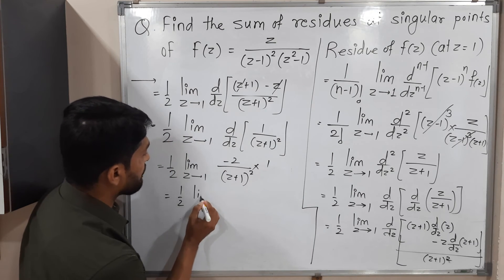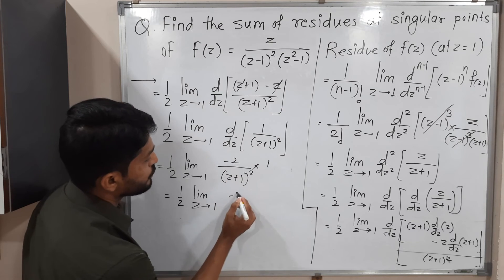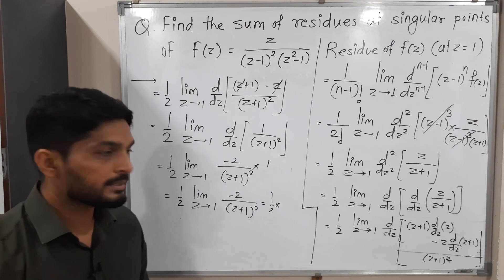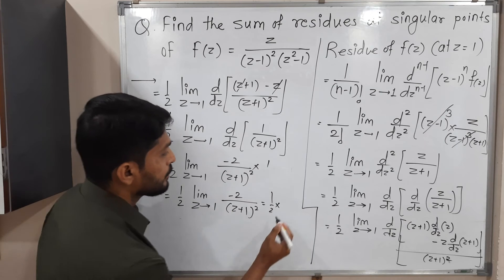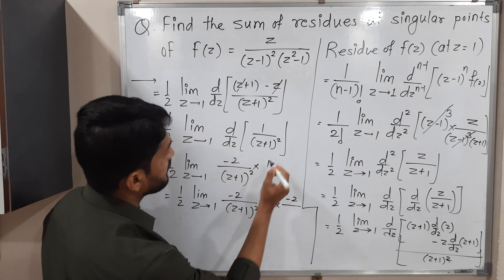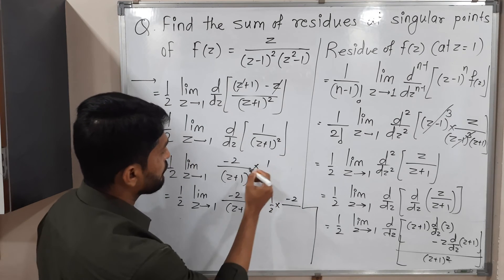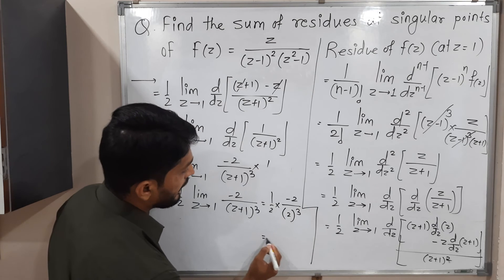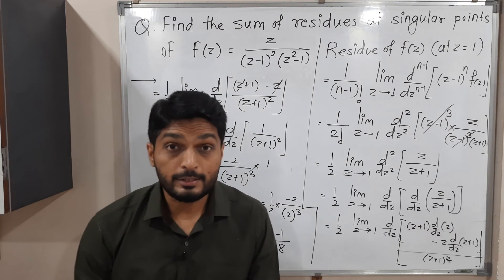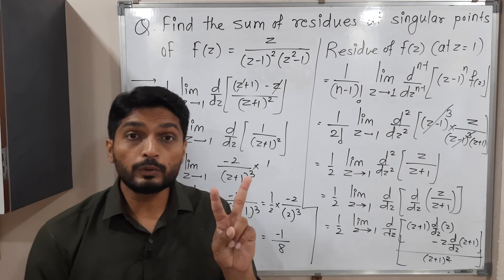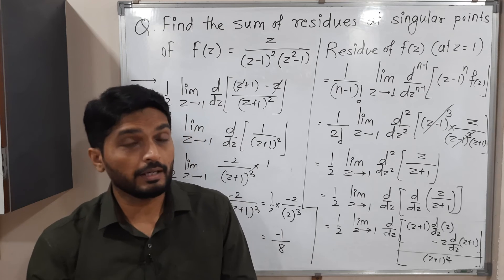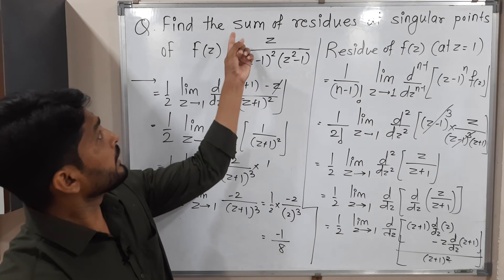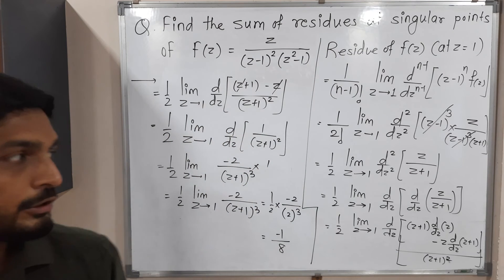Now we apply the limit as z tends to 1. Substituting z = 1: we have one half times minus 2 upon (1+1) cubed = one half times minus 2 upon 2 cubed = one half times minus 2 upon 8. The 2s cancel, giving minus 1 upon 8. This is the residue at z = 1, but this is not our final answer since we still need the residue at the simple pole z = -1.